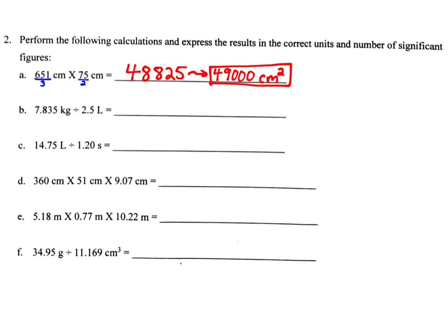For the next problem, we have 7.835, which has four significant figures, divided by 2.5 liters, which has two significant figures. When we do the math, our calculator says 3.134. That number has four significant figures, but our answer cannot have more than two because 2.5 liters has only two. So we round to two significant figures, which gives us 3.1. We are taking kilograms and dividing by liters, so our units become kilograms per liter. That's our final answer.